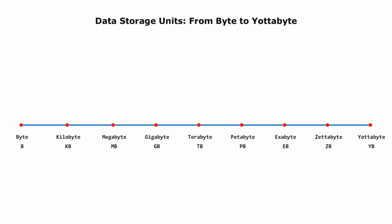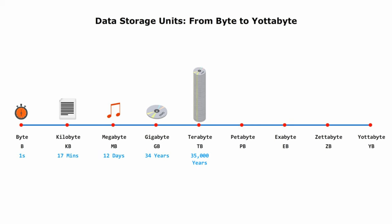Let's look at the diagram to illustrate the storage size from byte to yottabyte. One byte is one character, then one kilobyte is about a half page of text. A megabyte is a reasonable unit for a song or a piece of music. A standard DVD movie can have 5 to 8 gigabytes. One terabyte is about 100 to 200 stacks of DVDs, and it might be the file storage size we can comprehend.